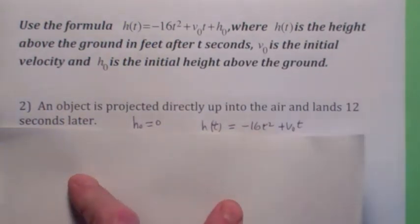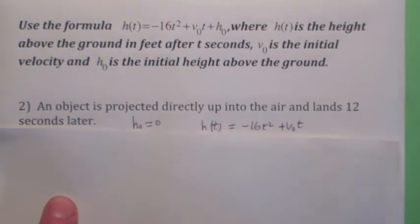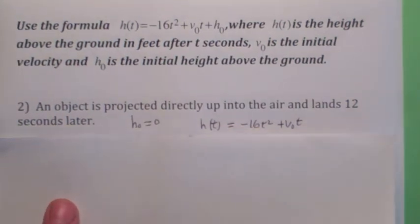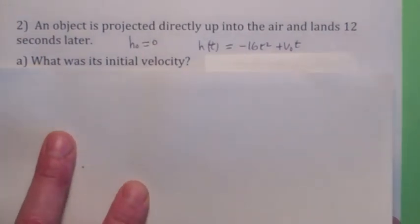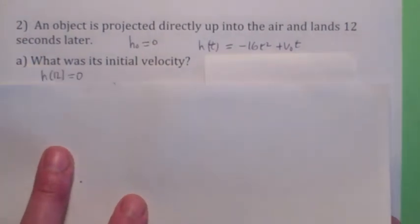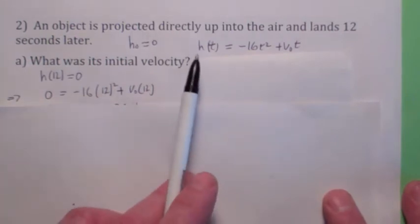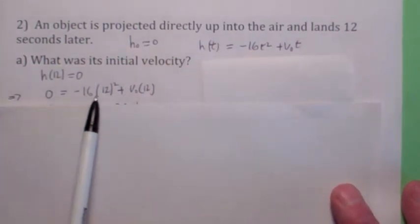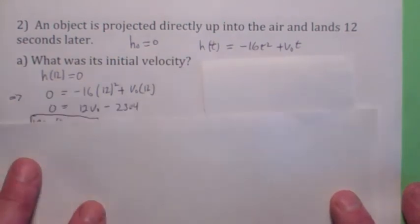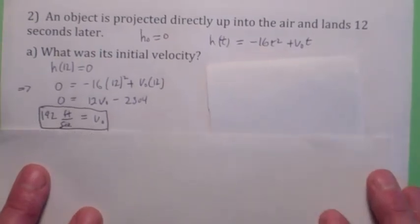So in that case, the formula, at least what we can gather so far, is h(t) is negative 16t squared plus v₀t. So the question is, the first question is, what is the initial velocity? Well, all they tell us is that h(12) is zero. So let's use that fact. h(12) is zero. All you have to do is plug in 12 for t. The whole thing should equal zero. So zero equals this function evaluated at 12. Notice you get an equation involving v₀. So v₀ turns out to be 192 feet per second.